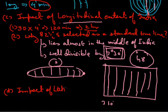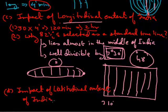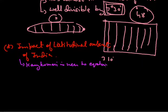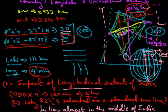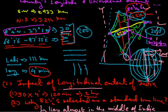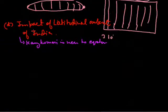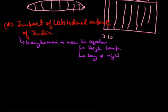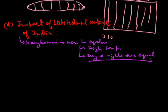Now the second question asked earlier was about the impact of latitudinal extent. Looking at India's latitudinal extent from 8 degrees to 37 degrees north, Kanyakumari is near the equator while Kashmir is far from it. The first effect we see is in temperature — in Kanyakumari the temperature is high, and the days and nights are approximately equal because it is near the equator.